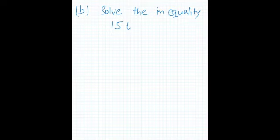Part B says solve the inequality. The question is 15t is smaller than 4t plus 7. Same method: left hand side, right hand side. If anything goes from left to right or right to left, the sign has to change from positive to negative and negative to positive.